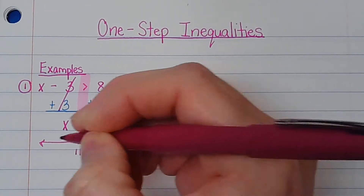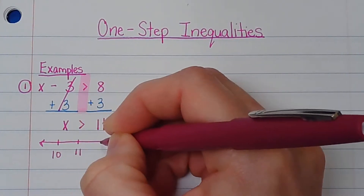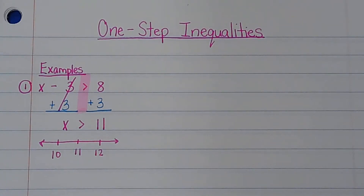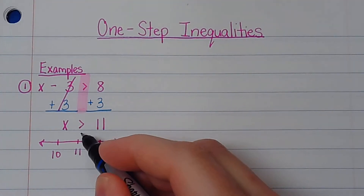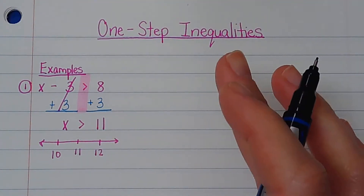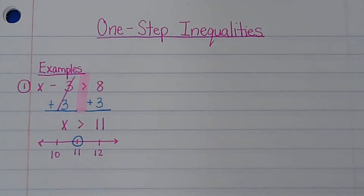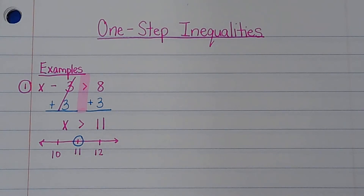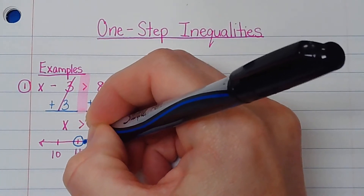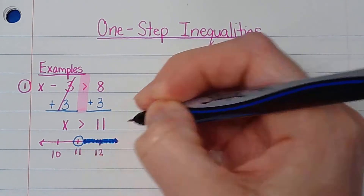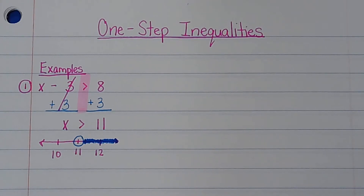Now when I go and plot that on a graph, remember 11 goes in the middle, with 10 and 12 on either side. My sign does not have a line underneath it — it's just the sign — so that's an open circle. And it says it has to be greater than 11, so the numbers greater than 11 would be going this way. It's not just 12; it's anything going this direction — it could be 12, it could be 212, it could be a million.